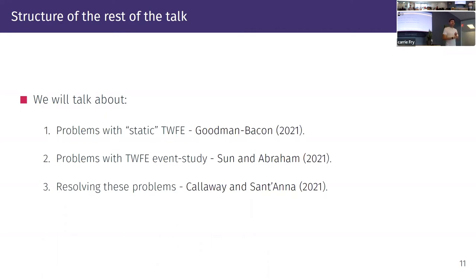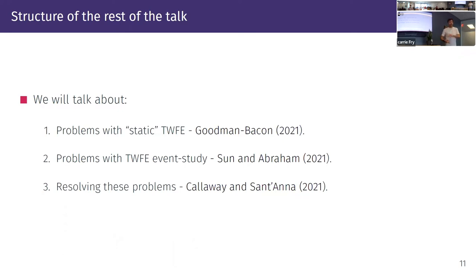Then I'll talk about the happy paper — Callaway-Sant'Anna — which is like we were all working on these issues at the same time with limited communication except between us and Bacon (who was my office neighbor). Bacon, Sun-Abraham, and Callaway-Sant'Anna complement each other: we know the problems and how to fix them. Other papers tackle these issues too — Chaisemartin-d'Haultfoeuille at the AER, Jeff Wooldridge, Borusyak-Jaravel-Spiess. These papers differ in the type of parallel trend assumptions they impose, how they handle covariates, and what type of uncertainty their standard errors reflect. In practice, if you have parallel trends in pre- and post-treatment periods, they tend to give very similar results.